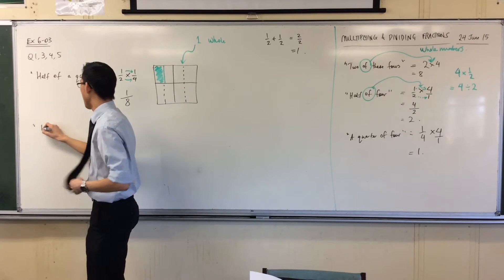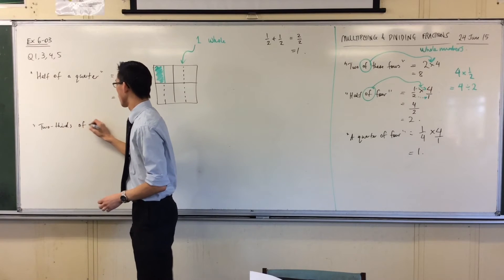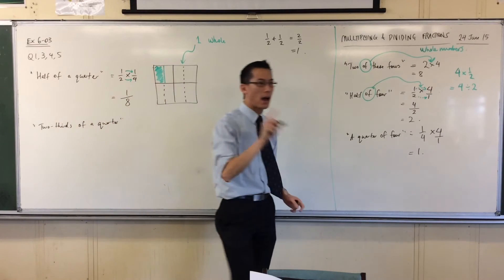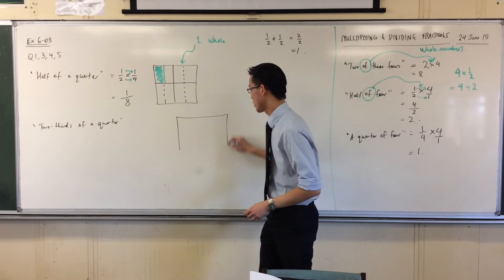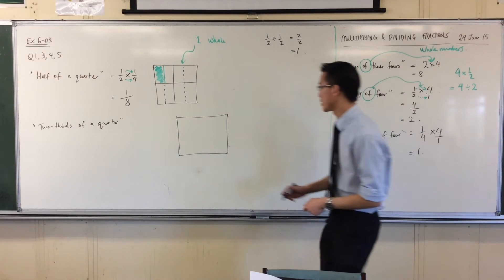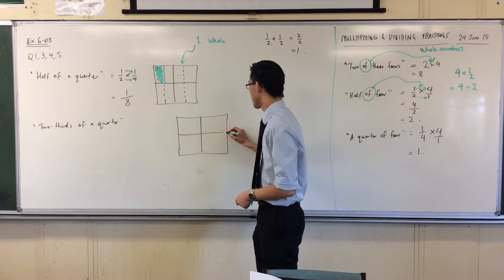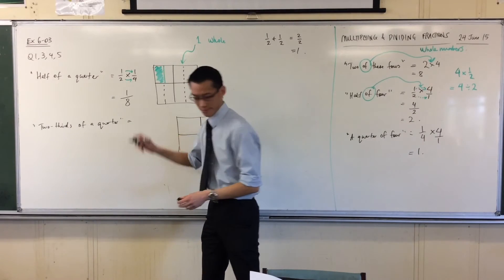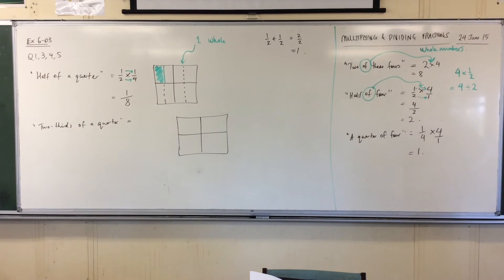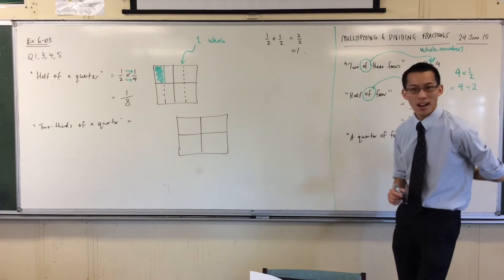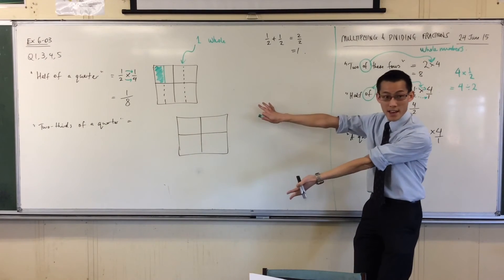Let's do something a little different, a little more challenging. How about two thirds of a quarter before you jump at an answer? How would you draw it? What would it look like? Start with a square. You put it down on your page. Put it down on your page what you think it would look like. I can see some drawings.